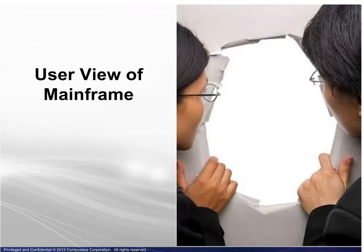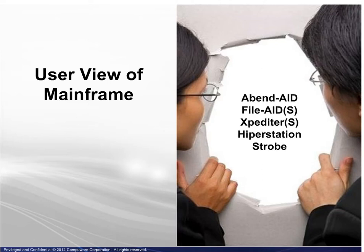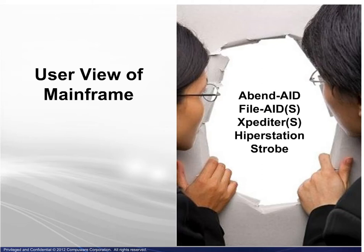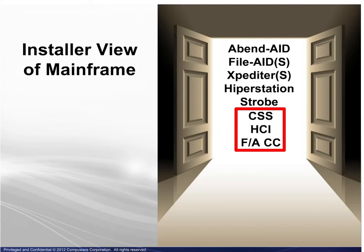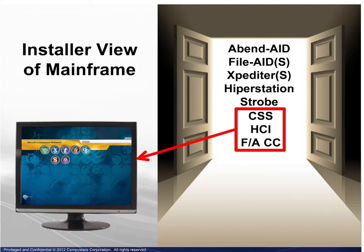Let's add some perspective here. The user view of the mainframe includes ABEND-AID, the FileAid group, the two Expediters, HyperStation, and iStrobe. The installer view of the mainframe is larger, and includes everything in the user view, plus CompuWear Shared Services, Host Communication Interface, and FileAid Common Components. It is these last three that ensure the Workbench is working properly.